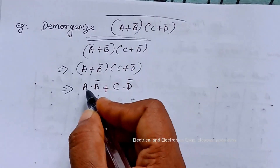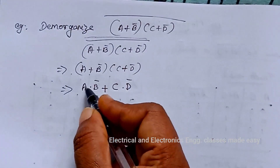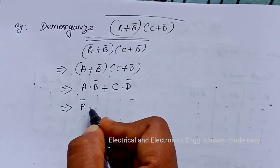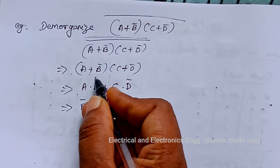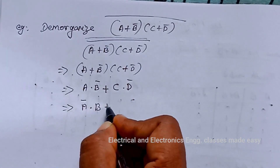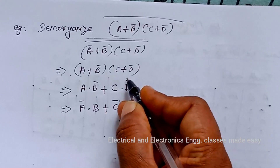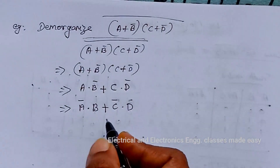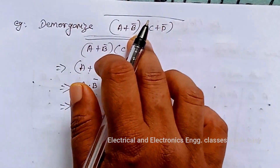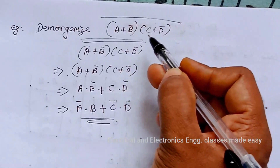We get A dot B bar plus C dot D bar. Now complement each of the variables: A becomes A bar, B bar becomes B bar bar which is B, C becomes C bar, D bar becomes D bar bar which is D. So the answer is A bar dot B plus C bar dot D.